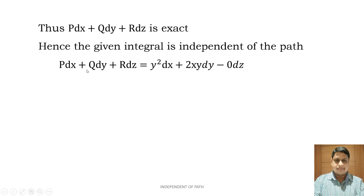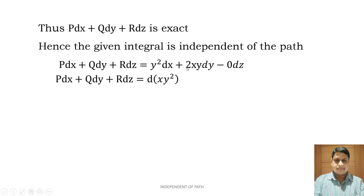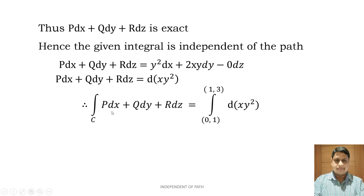Now we evaluate. P dx + Q dy + R dz = y² dx + 2xy dy + 0 dz. We can rewrite y² dx + 2xy dy as d(xy²), since differentiating xy² gives that expression. Therefore ∫_C P dx + Q dy + R dz = ∫ d(xy²), and by the definition of integration as the inverse of differentiation, the integral and derivative cancel.